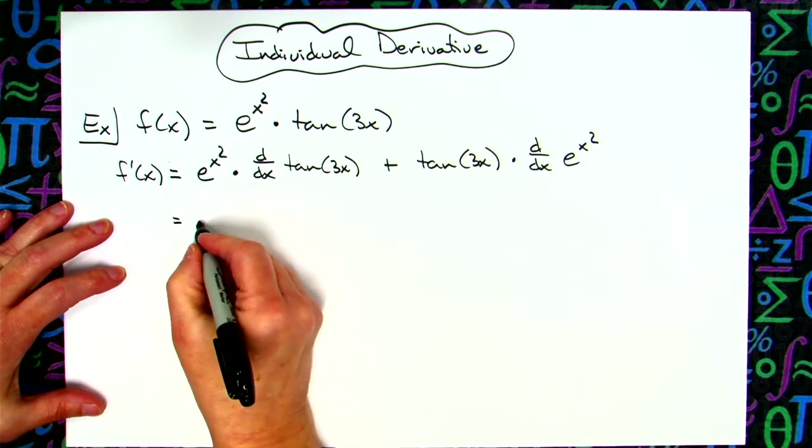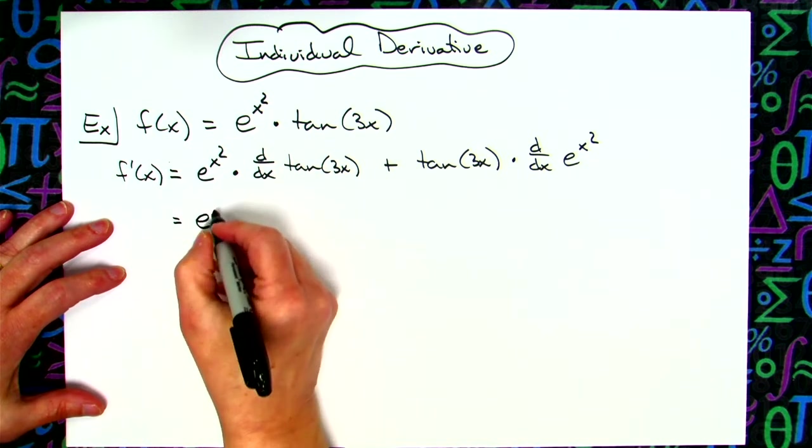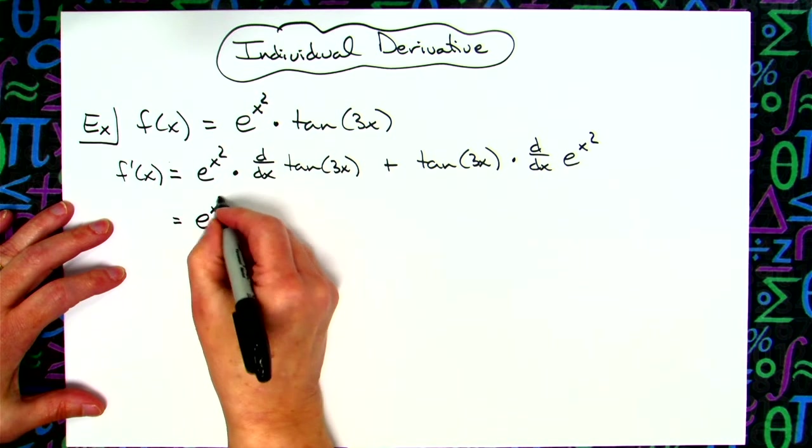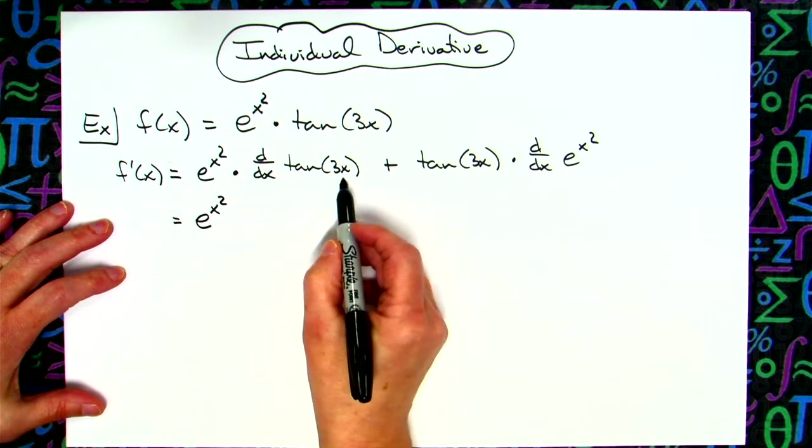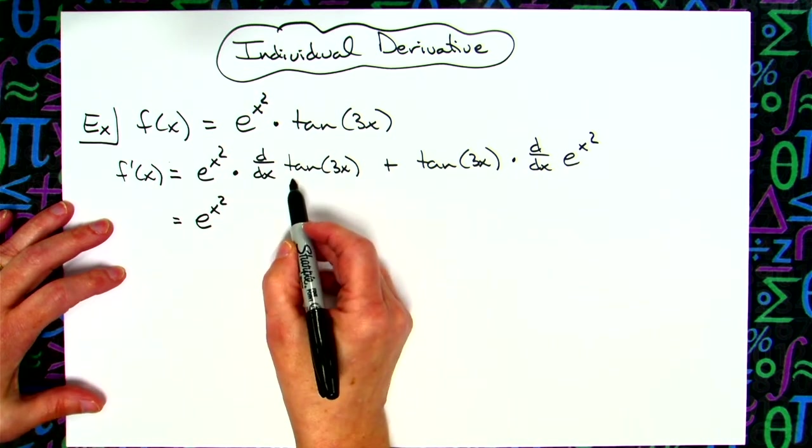Now in the second line I will actually start to take that derivative. I'll have that e raised to the x squared. Taking the derivative here, we've got memorized the derivative of tangent is secant squared.